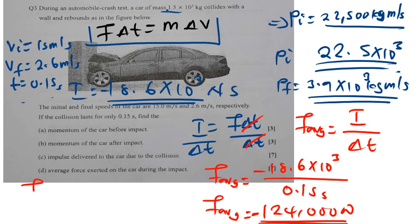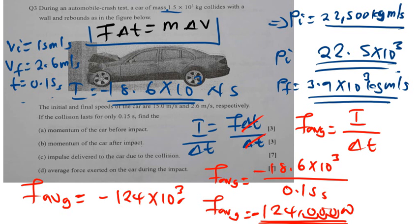I can express the average force in scientific notation as approximately −1.24 × 10⁵ newtons. The general idea with momentum is that we need to know the relationship between momentum and impulse and how they relate through the formulas — initial momentum, final momentum, and the impulse-momentum theorem. That is it for question 3.